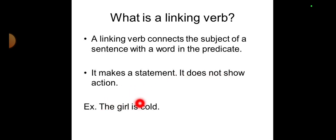For example: 'The girl is cold.' The verb here is 'is.' Is 'is' showing any action? Not at all. It is just linking the subject 'girl' with the complement 'cold.' So remember two things: first, the linking verb's job is to link the subject with the complement within a sentence; and second, a linking verb will never contain any action.